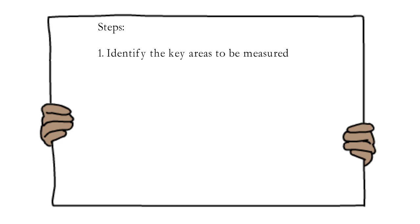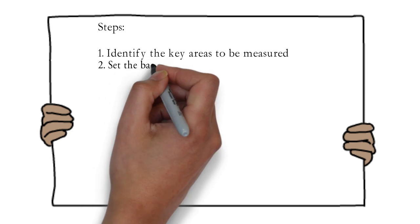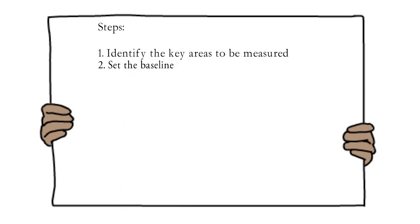The second step is to set the baseline. The key area to be measured here is the test execution productivity of resources working in the project. We can set the baseline as five test cases per resource per day, meaning every resource should complete five test case executions daily. If every team member follows this, the project goal can be met on time.